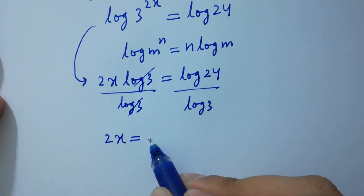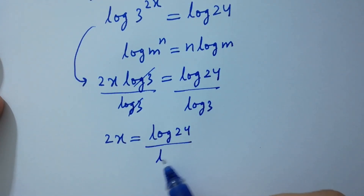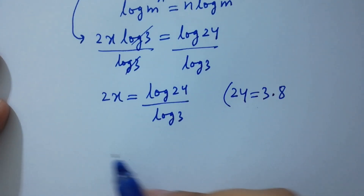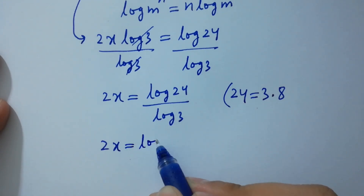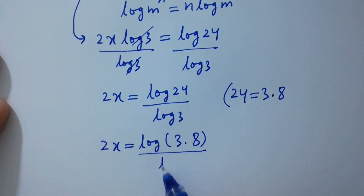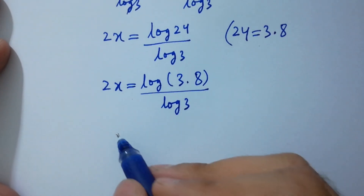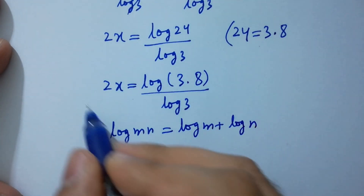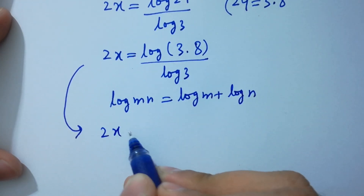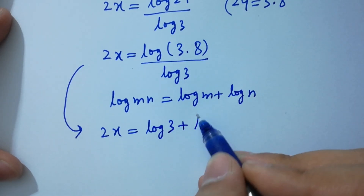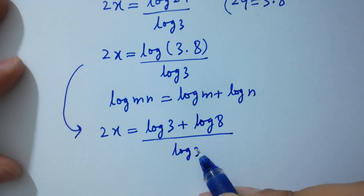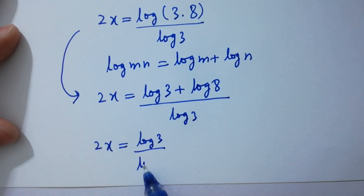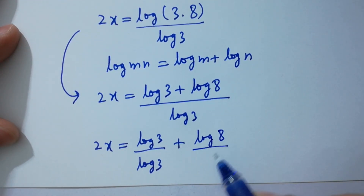So 2x equals log 24 over log 3. Since 24 equals 3 times 8, we have 2x equals log of 3 times 8 over log 3. Using log mn equals log m plus log n, 2x equals log 3 plus log 8, all over log 3. Separating the fractions: 2x equals log 3 over log 3 plus log 8 over log 3.